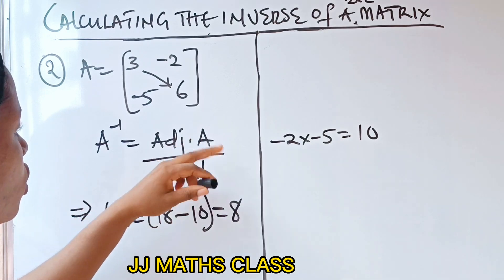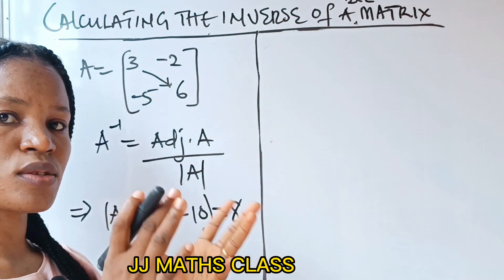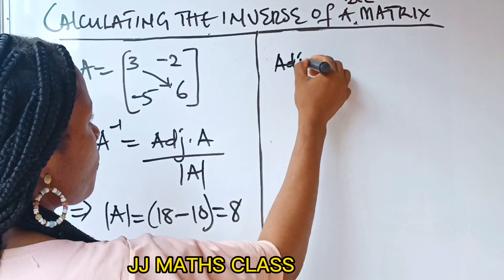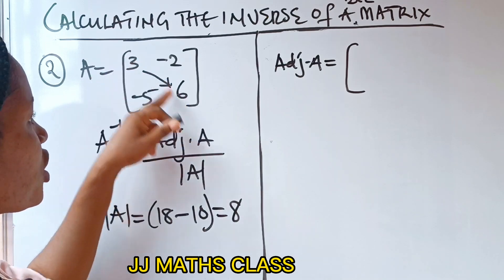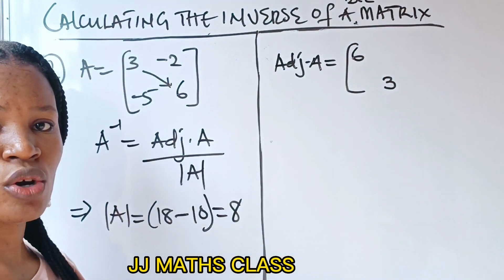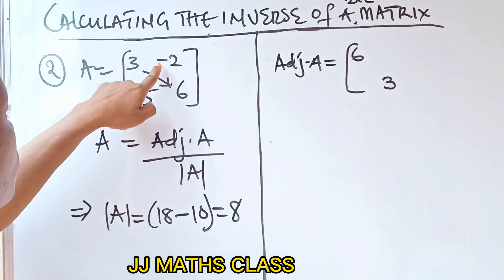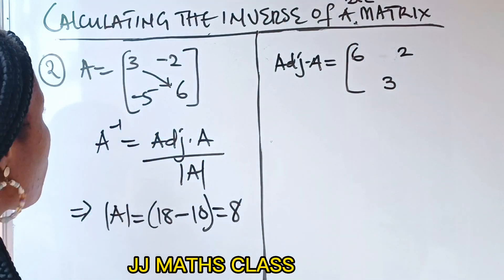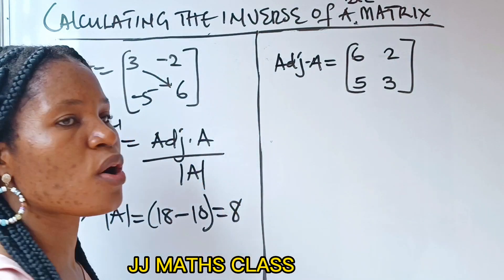So we go ahead and find the adjoint of A. Remember that for the adjoint of A, you are not solving anything — all you do is manipulate the elements of A. We interchange the positions of 3 and 6. Then we change the signs of the other diagonal: minus 2 becomes plus 2, and minus 5 becomes plus 5. So this becomes our adjoint of A.